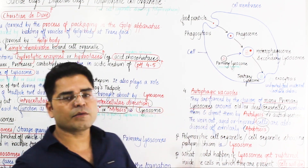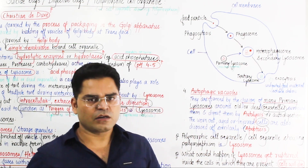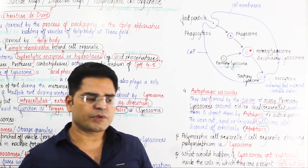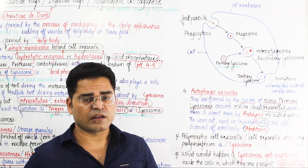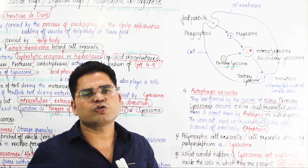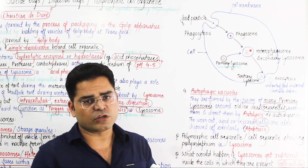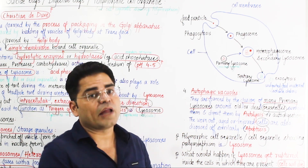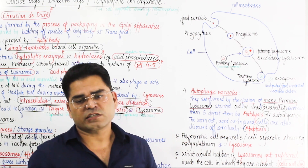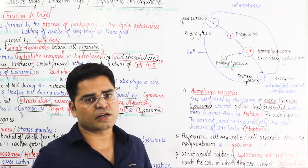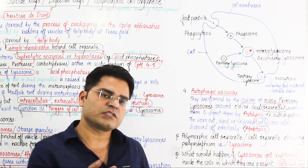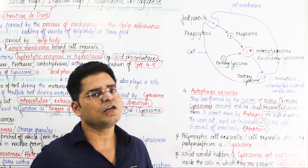Now we come to the autophagic vacuole. When a cell component is damaged or injured — such as an old or dead organelle — the cell needs to destroy it. Some primary lysosomes surround and engulf that damaged organelle, forming a different structure called the autophagic vacuole.